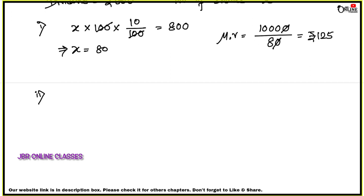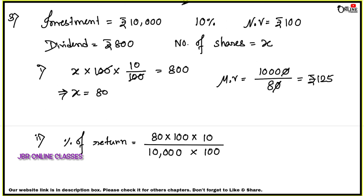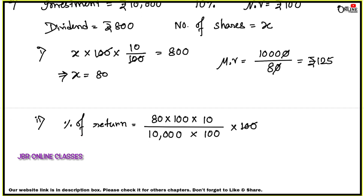Number two: find the rate percent which he earns on his investment. Apply the percentage of return formula: 80 shares into 100 nominal value into 10 by 100, divided by total investment of 10,000, into 100. The 100s cancel out, giving 8%. That is your final answer.